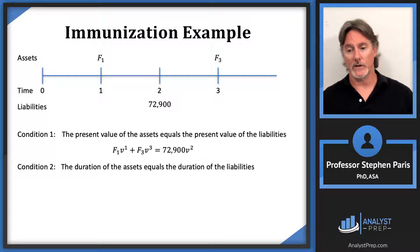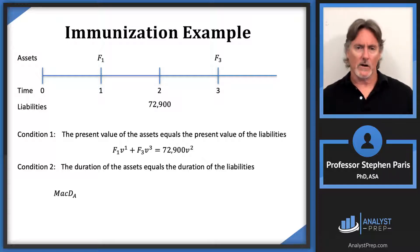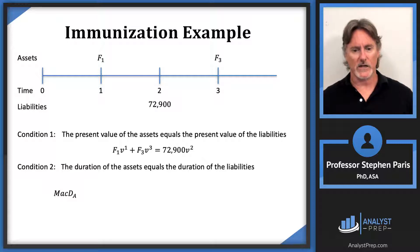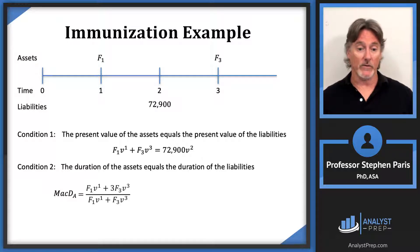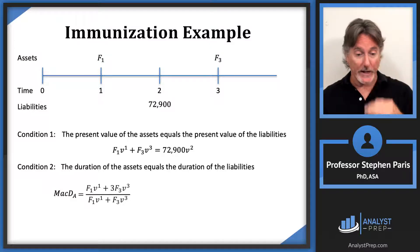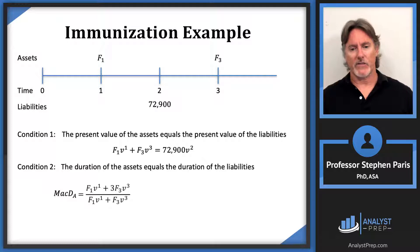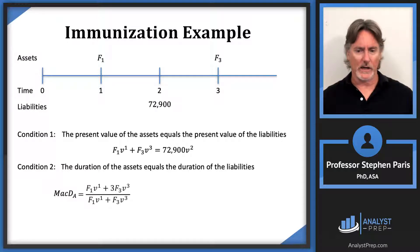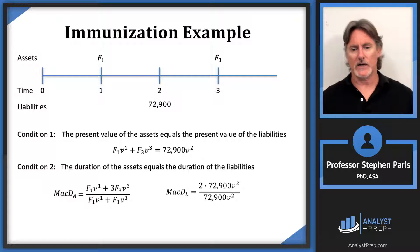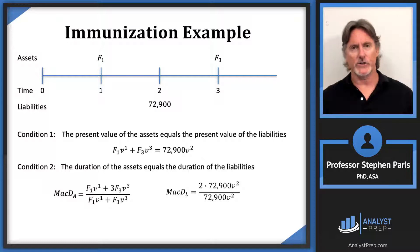The second condition is that the duration of the assets equals the duration of the liabilities. Thinking in terms of Macaulay duration: for the assets, the denominator is the present value of the assets, and the numerator is 1·F1·V + 3·F3·V³. For the liabilities, the denominator is 72,900·V² and the numerator is 2·72,900·V².